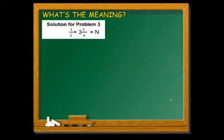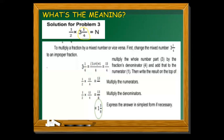For problem number two, the solution is: one-half times three and one-fourth equals n. We can see there is a mixed number, so we need to change the mixed number to an improper fraction first. To multiply a fraction by a mixed number, first change the mixed fraction 3 and one-fourth to an improper fraction.